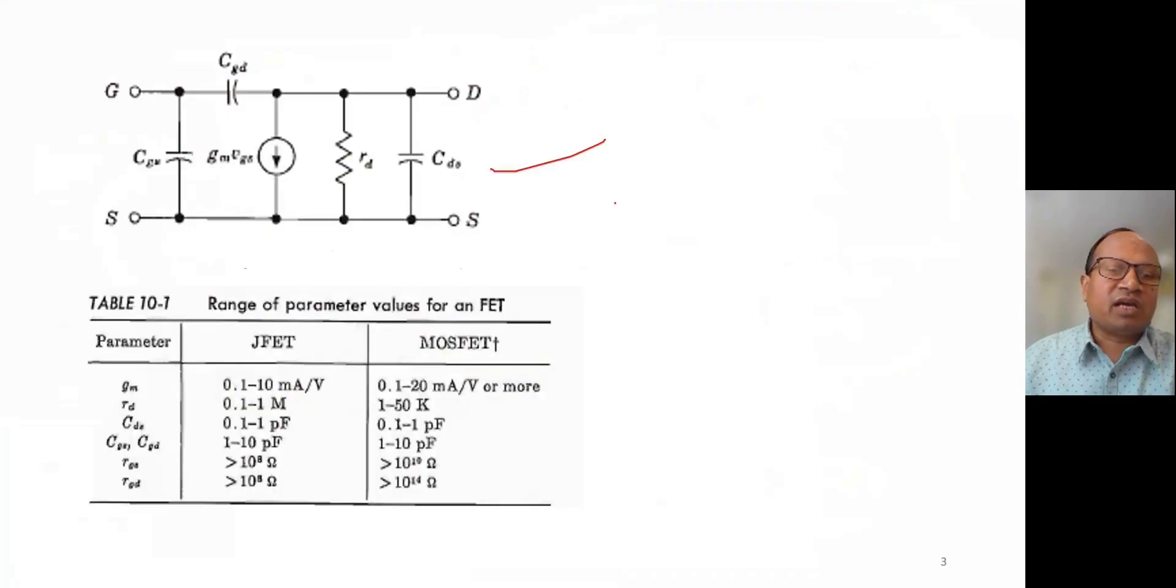So this is the final model, and these are the values for JFET and MOSFET. This is the transconductance value for JFET and MOSFET, drain-on resistance, then the capacitances. These capacitances are in picofarad. And when you see RGS and RGD, they are very high, greater than mega ohm, and they are ignored and that's almost equivalent to open circuit.